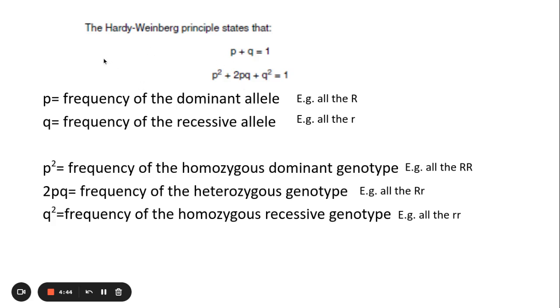Now it normally tells you this bit here that I've written out, however not these bits. P is basically the frequency of the dominant allele, for example all the big R's within the population. Q is the frequency of the recessive allele, for example all of the recessive R's within the population. P squared is the frequency of the homozygous dominant genotype, for example all of the big R big R dominant genotypes.